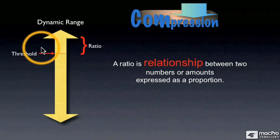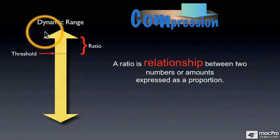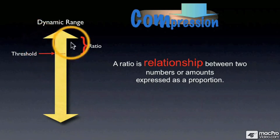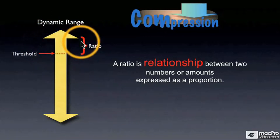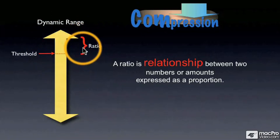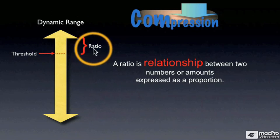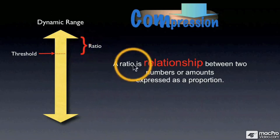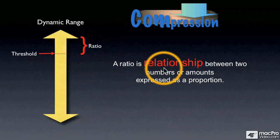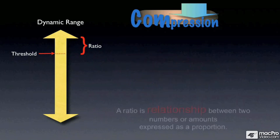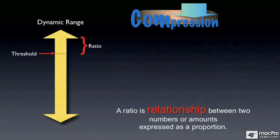In a compressor, that relationship is between the gain of the signal coming in that goes above the threshold, and the gain of the signal coming out. That is our relationship, and it's expressed as a proportion.